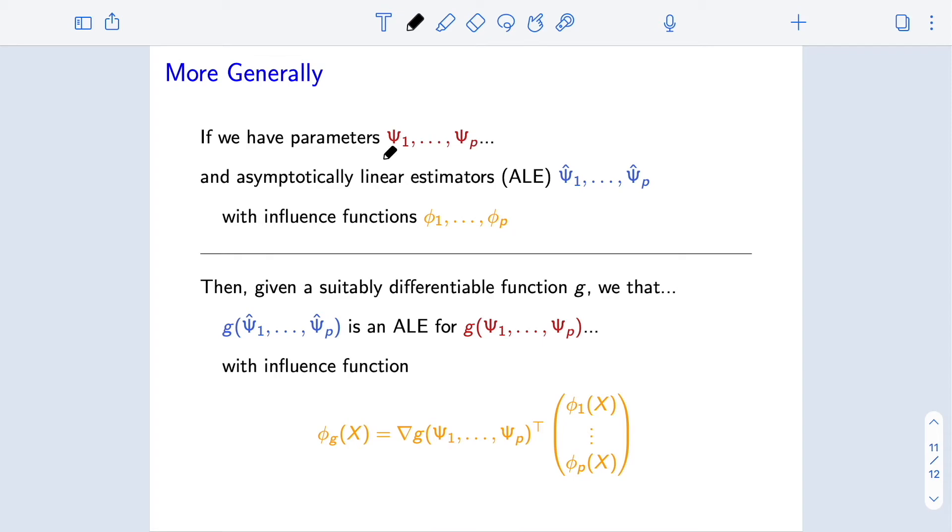So we did this in one example. What does this mean more generally? Well, if we start with p parameters psi 1 to psi p and p asymptotically linear estimators of those parameters, and we let the influence functions be denoted by phi 1 to phi p, and we want to estimate some differentiable combination of all of those p original parameters, and we do that by plugging in our estimates into that same differentiable transformation, then we actually know that this estimator is asymptotically linear for estimating this parameter. And its influence function, in fact, is given by this simple combination of the original influence functions and the gradient of this function g. So the influence function is just the gradient inter-producted with that vector of influence functions.